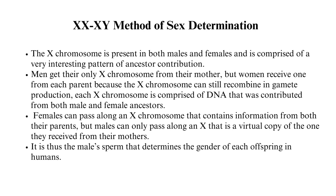Each X chromosome is comprised of DNA that was contributed from both male and female ancestors. Females can pass along an X chromosome that contains information from both their parents, but males can only pass along an X that is a virtual copy of the one they received from their mothers. It is thus the male sperm that determines the gender of each offspring in humans.